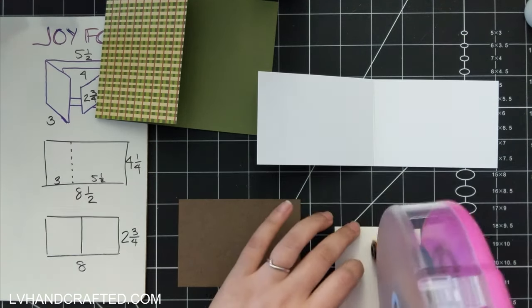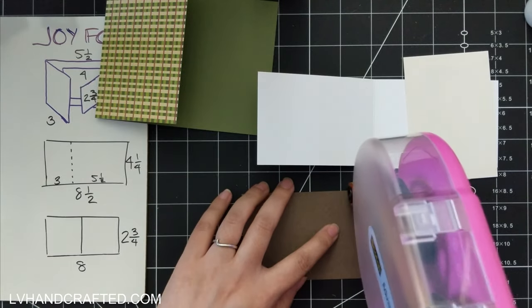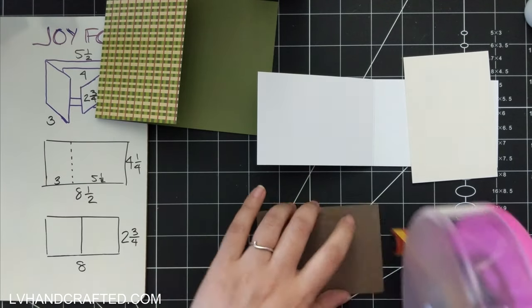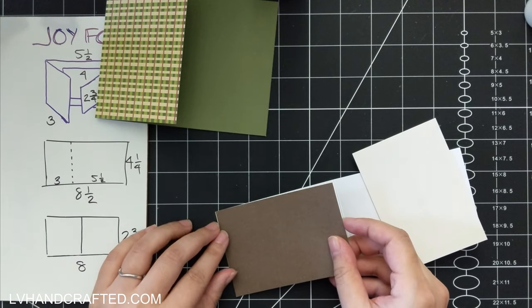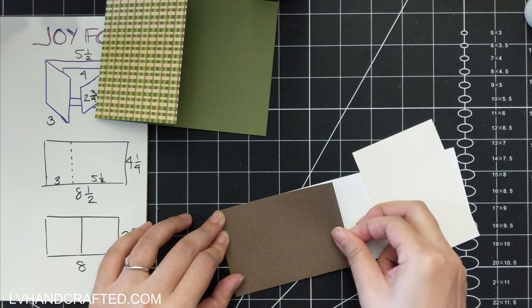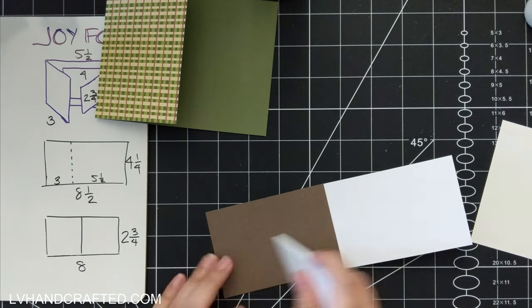And both of my card bases are cut from 120 pound heavyweight cardstock, although with so much patterned paper lining this, I think you could probably get away with maybe 80 pound.